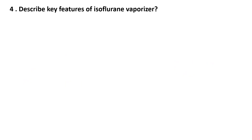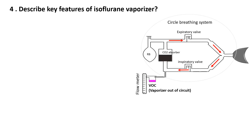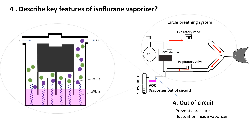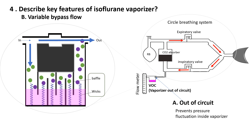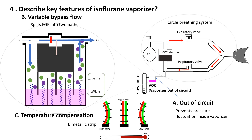Describe key features of the isoflurane vaporizer. An isoflurane vaporizer is placed outside the breathing circuit — out of circuit — meaning the patient's breathing does not directly draw vapor from it, preventing pressure fluctuations during exhalation. It uses a variable bypass system, where a small portion of fresh gas flows through the vaporizing chamber becoming saturated with isoflurane vapor, while the rest bypasses it. The wicks and baffles inside the chamber increase the surface area so that the fresh gas picks up more isoflurane vapor. The two streams then mix to achieve the precise dialed concentration.